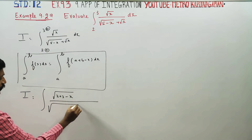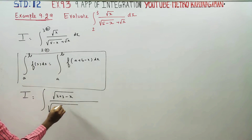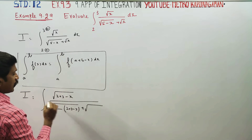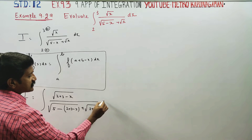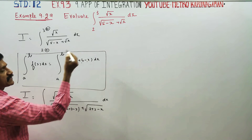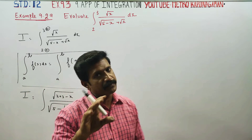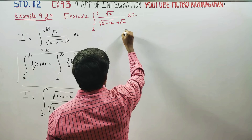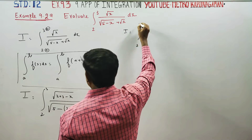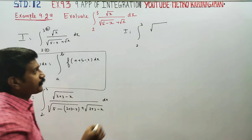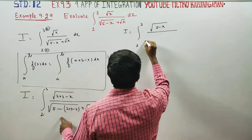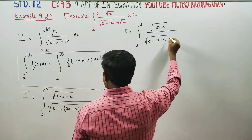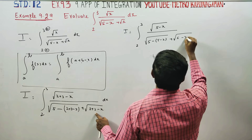Applying the property, x is replaced by 5 minus x. So root x becomes root of 5 minus x, and root of 5 minus x becomes root of 5 minus (5 minus x), which is root x. Therefore I equals the integral from 2 to 3 of root(5 minus x) divided by root(5 minus x) plus root x, dx.